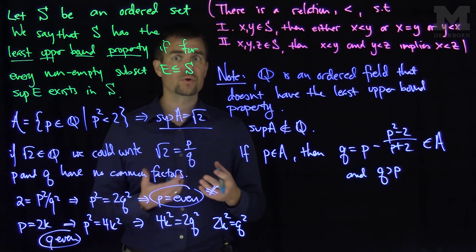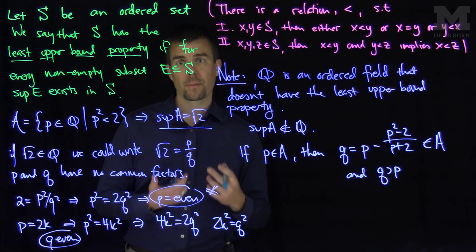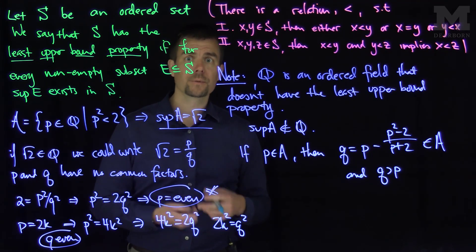So what we'll do in further videos is we'll construct the real numbers. When we construct the real numbers, we'll see the real numbers by construction will satisfy the least upper bound property, and they are an ordered field. Thank you very much.